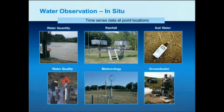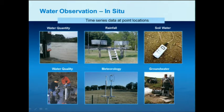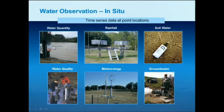For those of us who are water resources engineers, water data means measurements of water quantity — rainfall, soil moisture, water quality, meteorology, groundwater. These are time series observations taken at point locations. This one happens to be the Manawatu River at Teachers College, and we have two representatives from New Zealand here. This happens to be the location of the longest flow record in New Zealand, started in 1928.